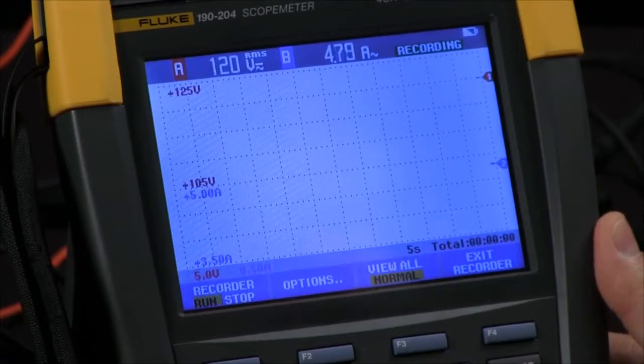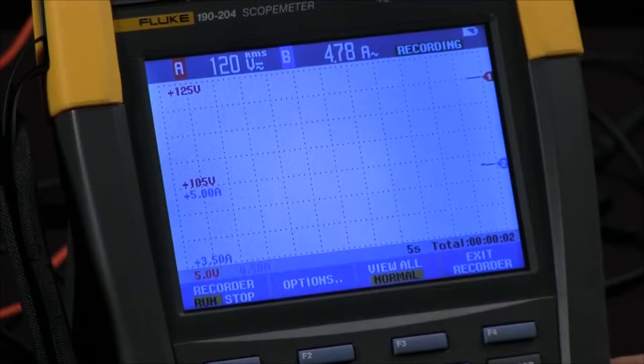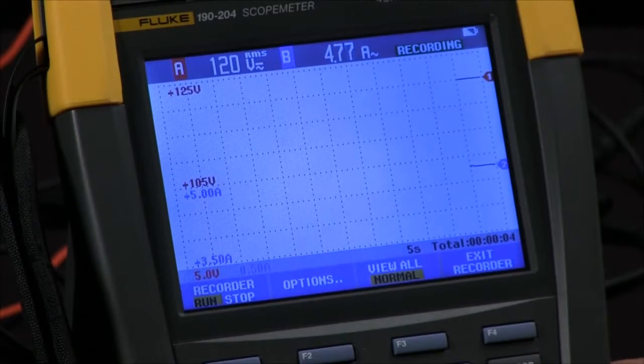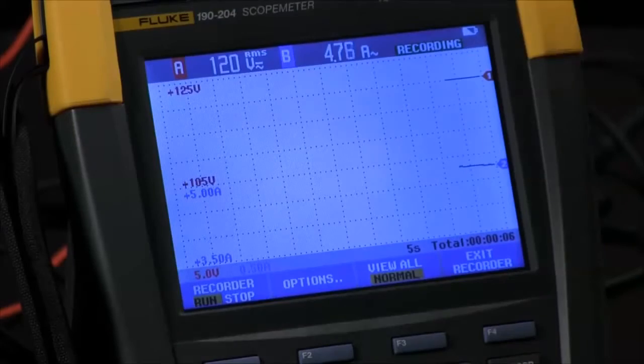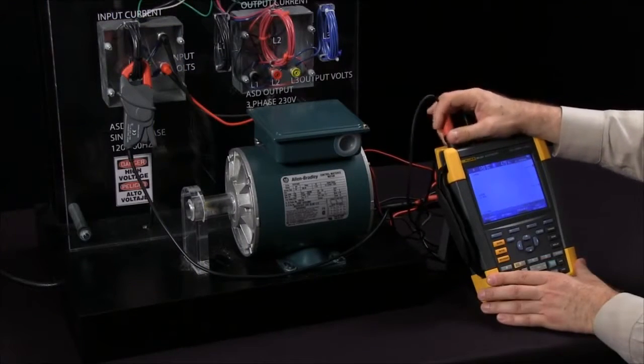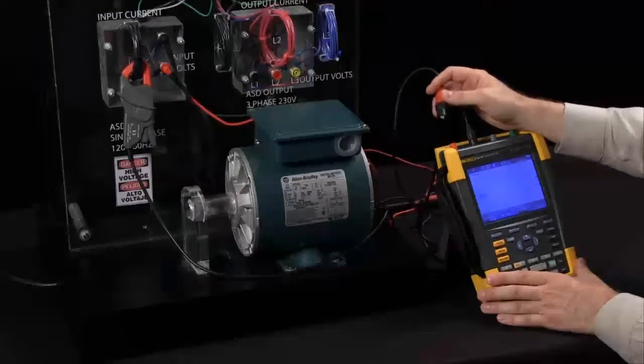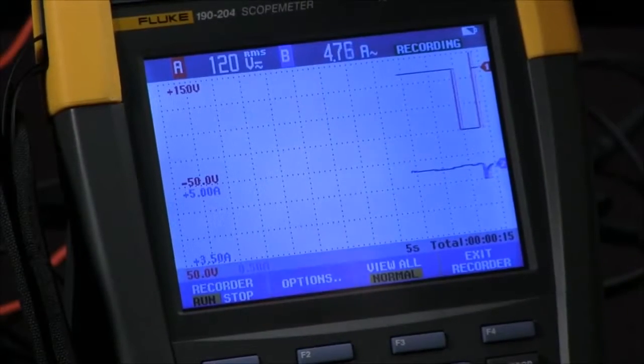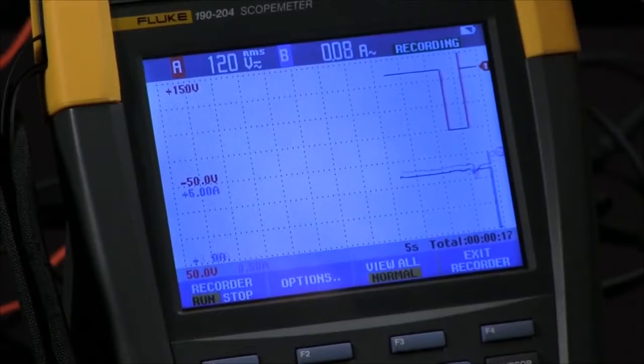To begin we simply select trend plot and you'll see how we start automatically to graph a line across the screen. If we have an interruption, and I'll cause that by disconnecting the probe, you see how we're dropping out on channel one and I can also induce a fault into channel two.